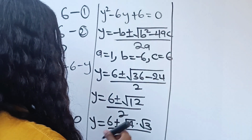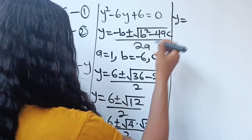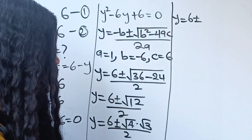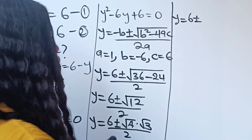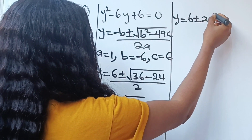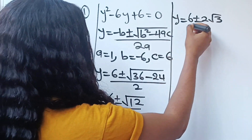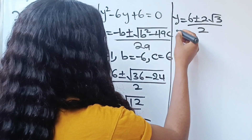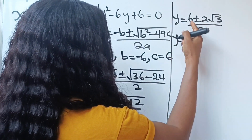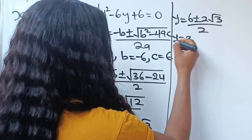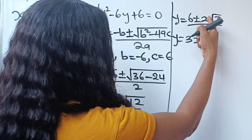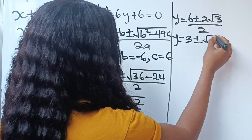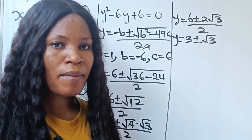So y equals 6 plus or minus — square root of 4 gives us 2, times root 3 — divided by 2. That means y equals 6 divided by 2, which gives us 3, plus or minus 2 divided by 2, which gives us 1, times root 3 remaining.